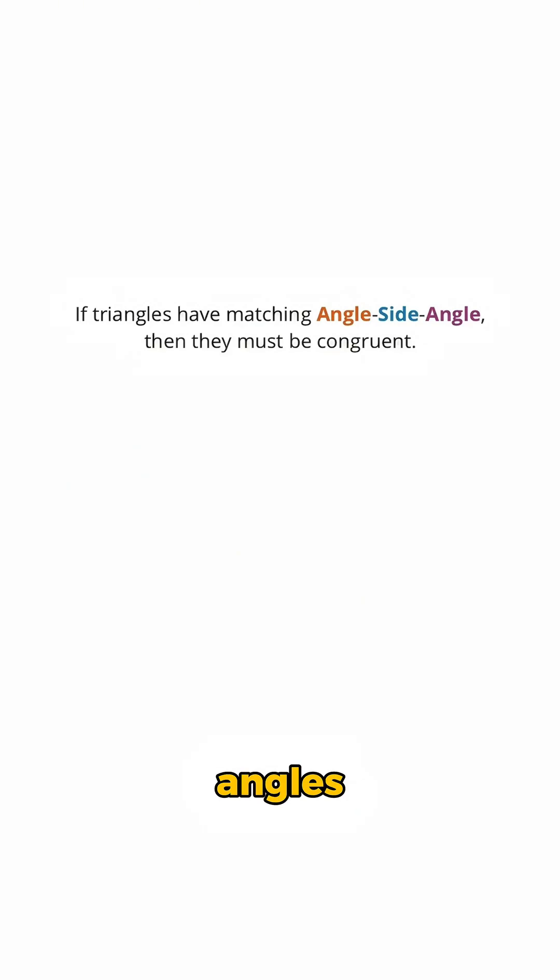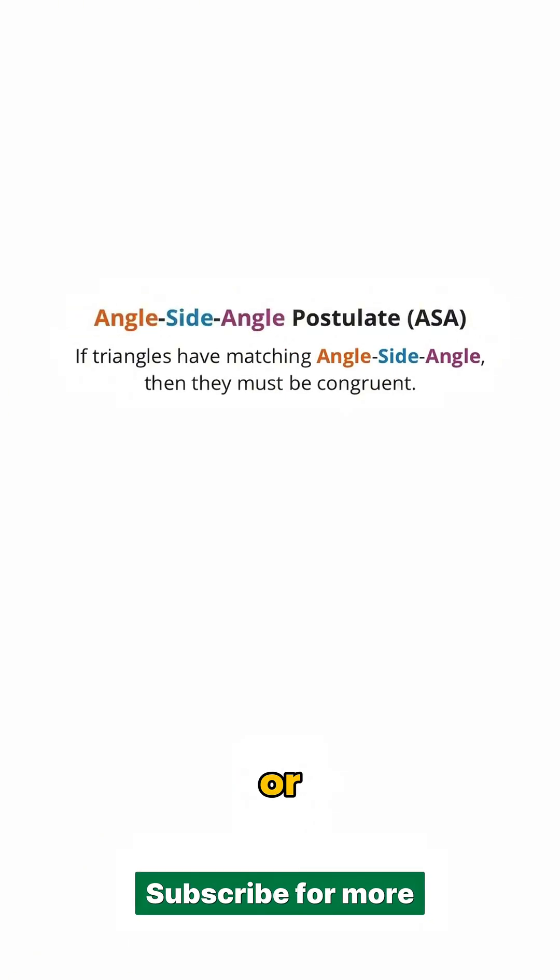So yes, if triangles have two matching angles and matching side lengths between the angles, then that's enough to guarantee that they're congruent. And this fact is known as the angle-side-angle postulate, or ASA.